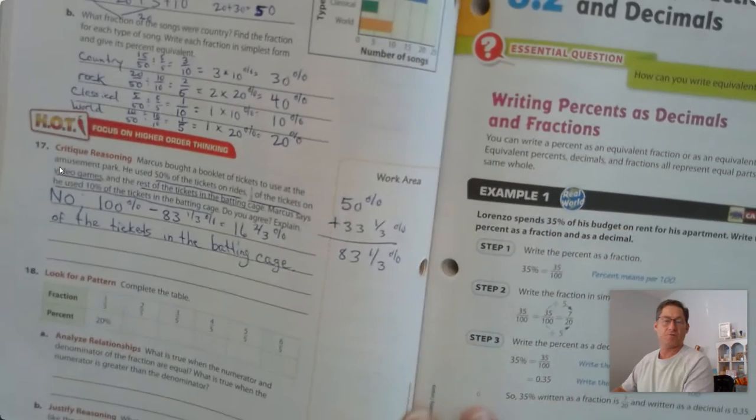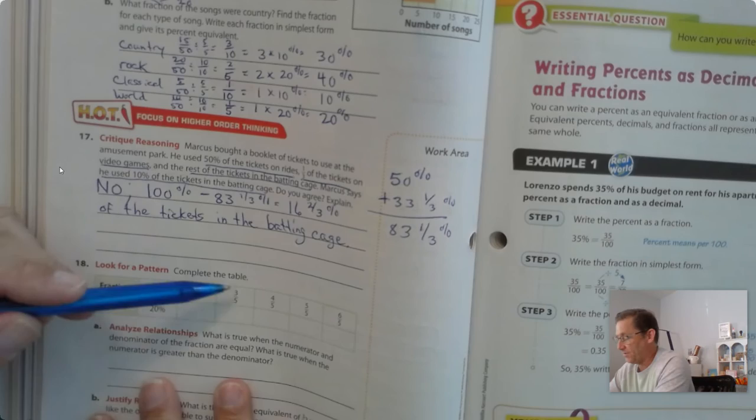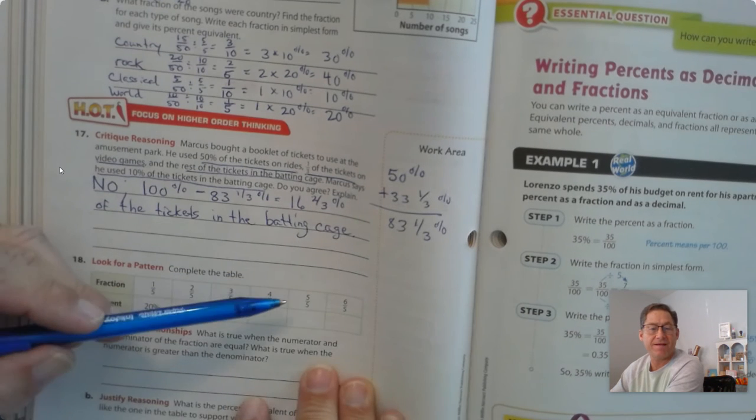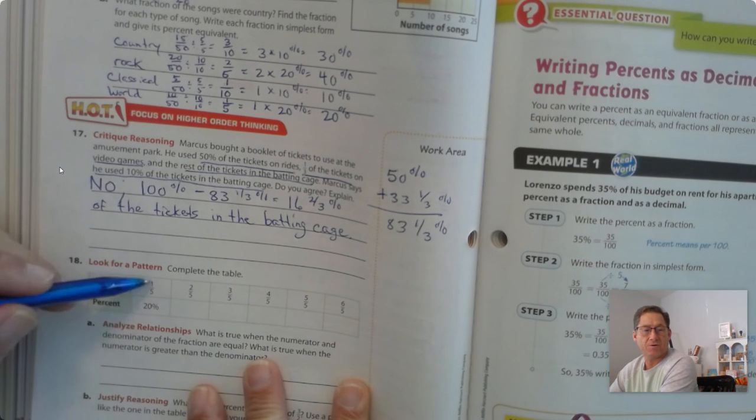Number 18. Let's look for a pattern. So, we have one-fifth, two-fifths, three-fifths, four-fifths, five-fifths, and six-fifths. And we know one-fifth is a benchmark of 20%.